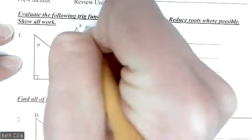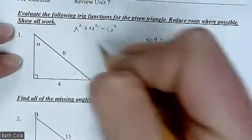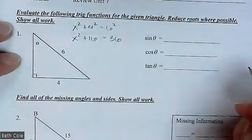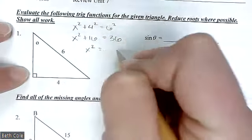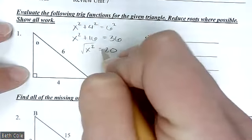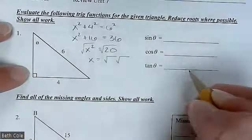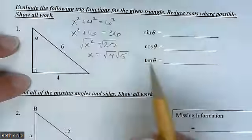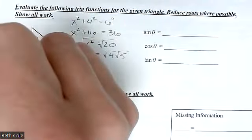It would be X² + 4² = 6². This would be 16, and this would be 36. Subtract that over and you should get 20. What two numbers multiply to give 20? 4 times 5. The square root of 4 is 2, so the answer is 2√5.